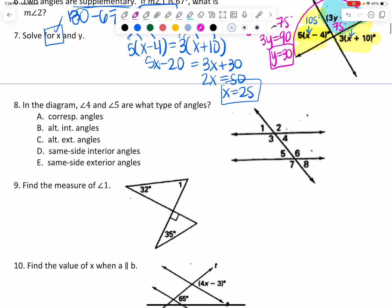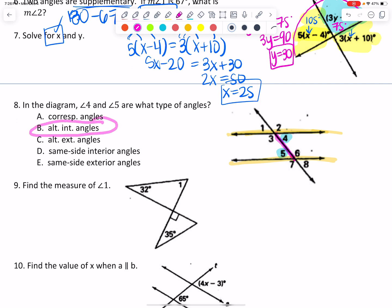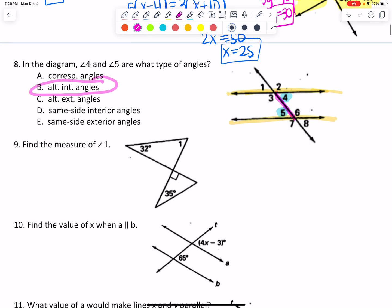A little more multiple choice practice. It says in the diagram, angle 4 and angle 5 are what kinds of angles? The first thing I notice is that they're on the inside of these parallel lines and on opposite sides of the transversal, which is alternate. So those are going to be alternate interior angles — 4 and 5 are alternate interior. And if the lines are parallel, then they're congruent.